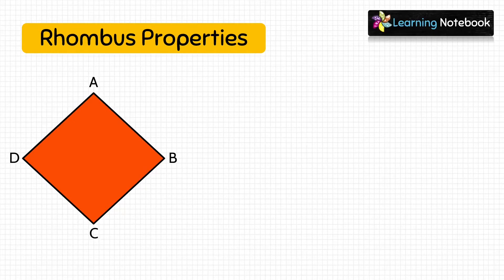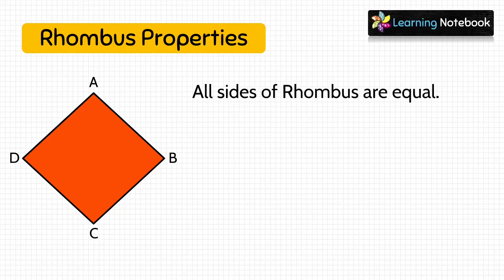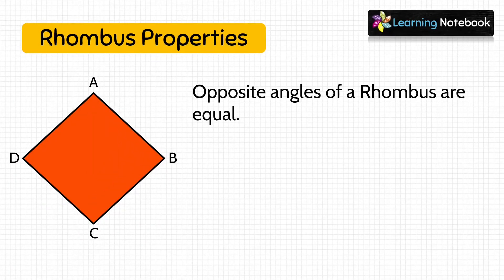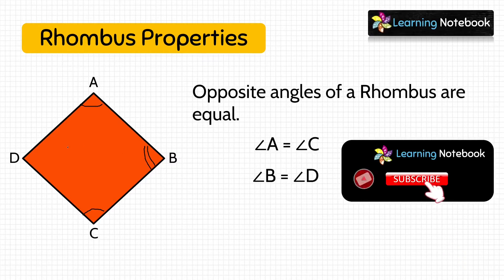Now let's understand properties of rhombus. First property of rhombus is all sides of rhombus are equal. It means AB equals BC equals CD equals DA. Second property of rhombus is that its opposite angles are equal. It means angle A equals angle C and angle B equals angle D.